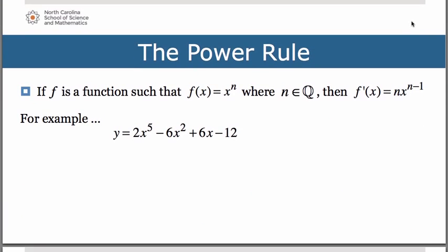So what the power rule states is that if f is a function such that f of x is equal to x to the n, where n is an element of the rational numbers — remember Q is our mathematical symbol for the rational numbers — and remember a rational number is any number that can be expressed as a fraction. Then f prime of x, the derivative, is equal to n, which was the exponent, times x, now raised to the n minus 1 power.